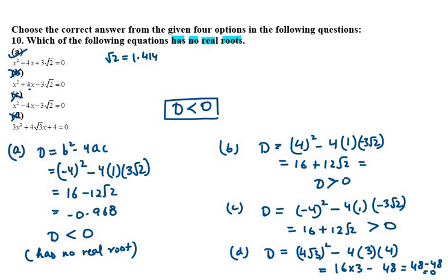So the correct option is part A, which has no real roots. That's the answer for question number 10.